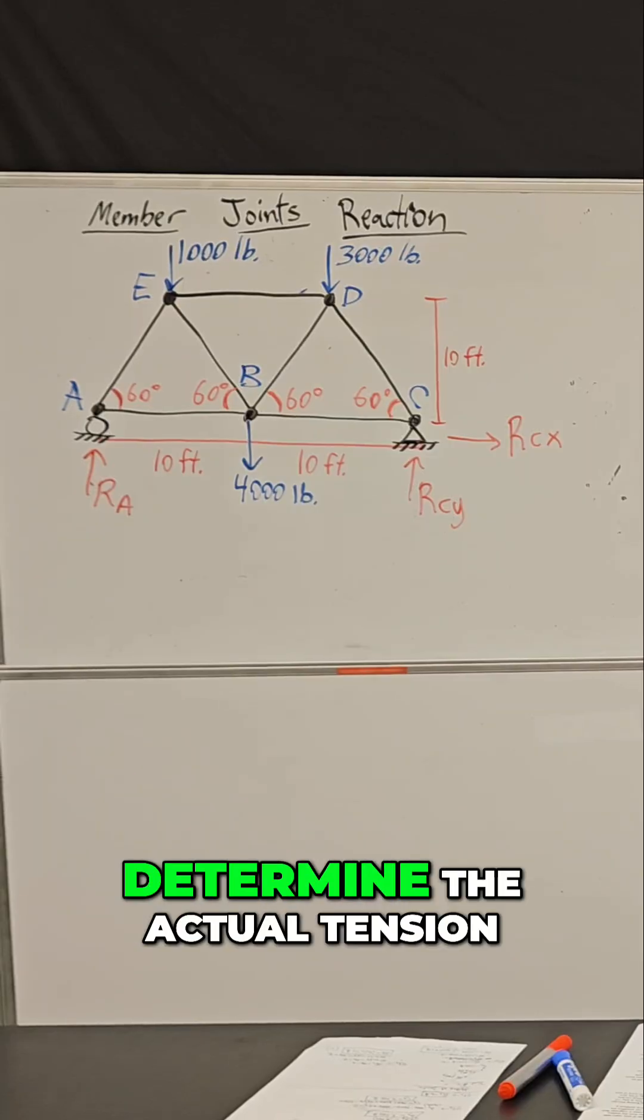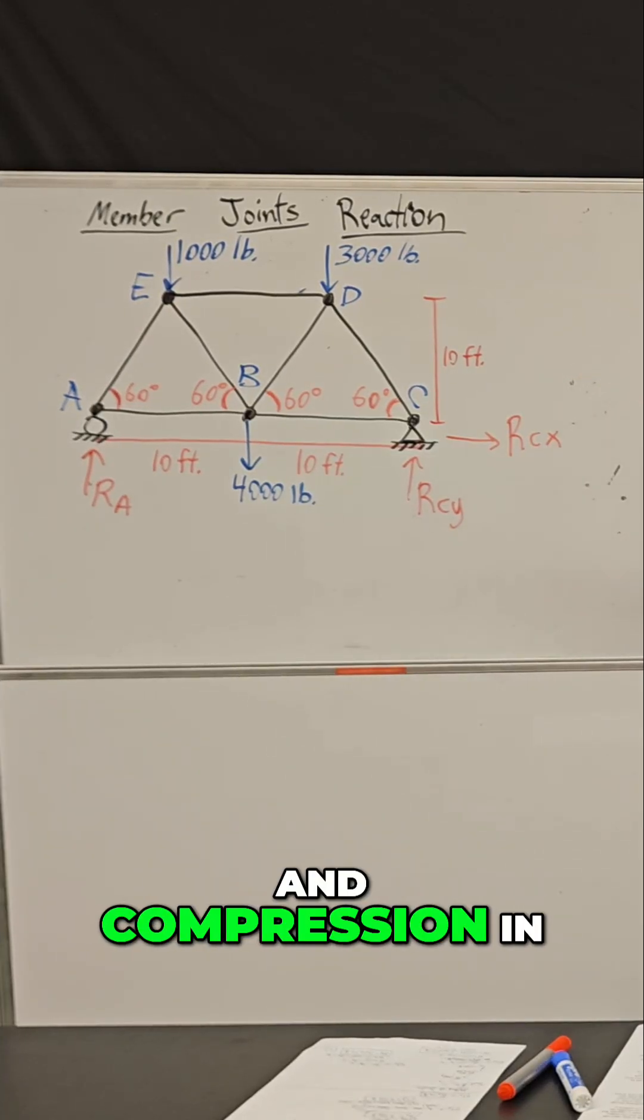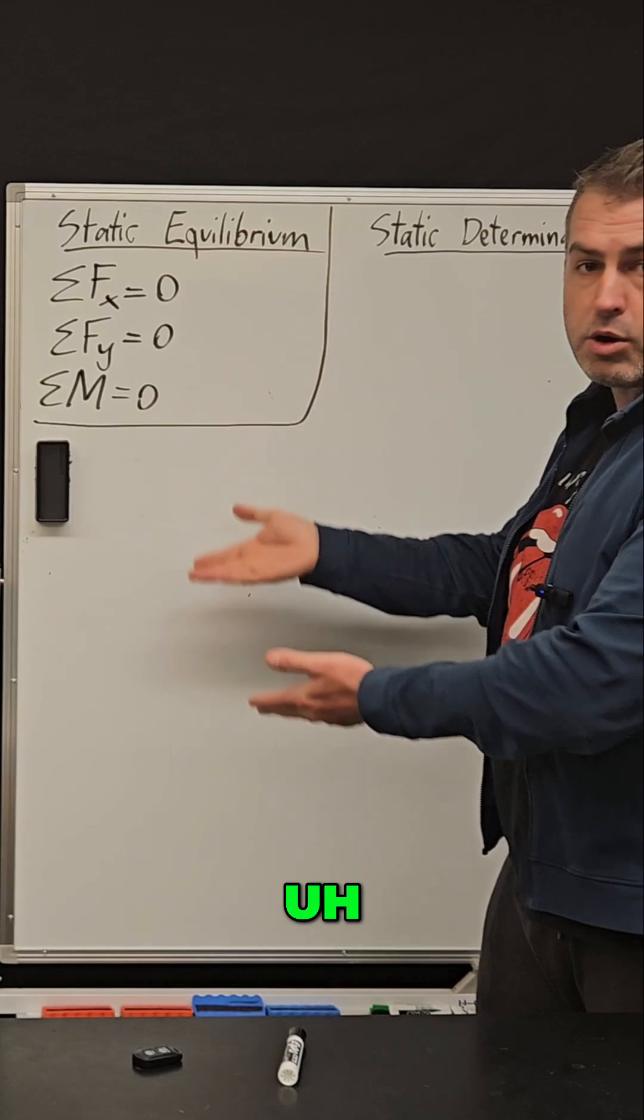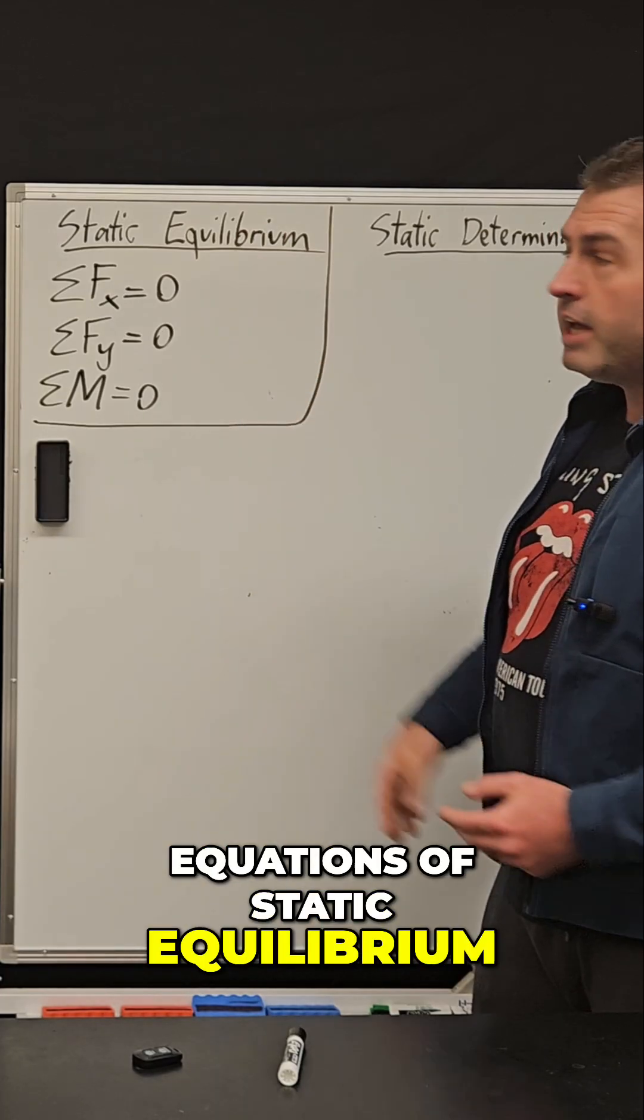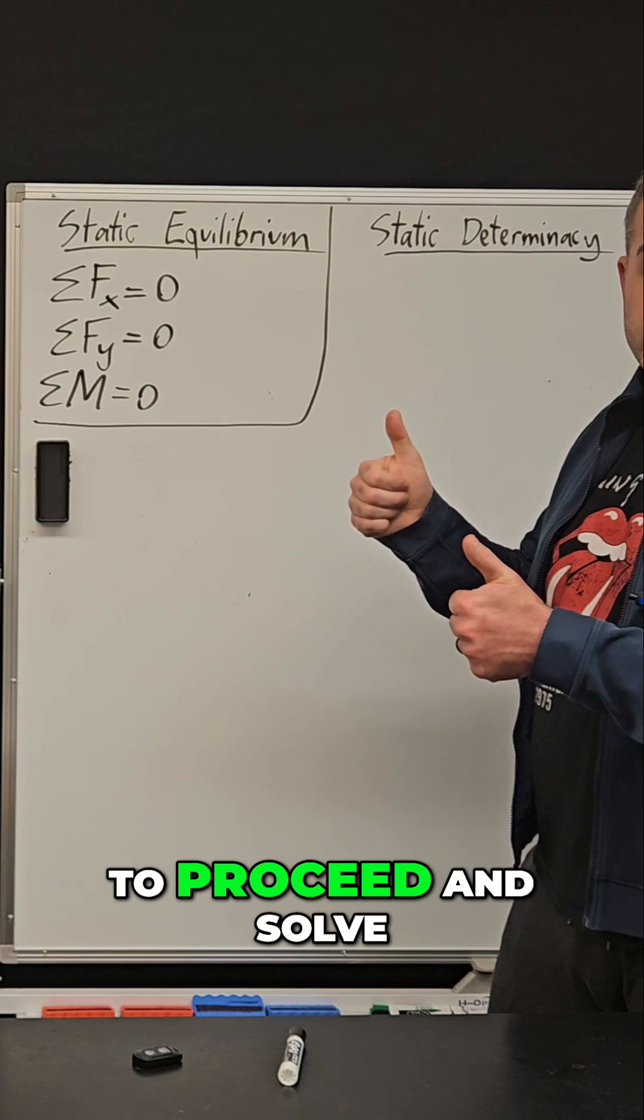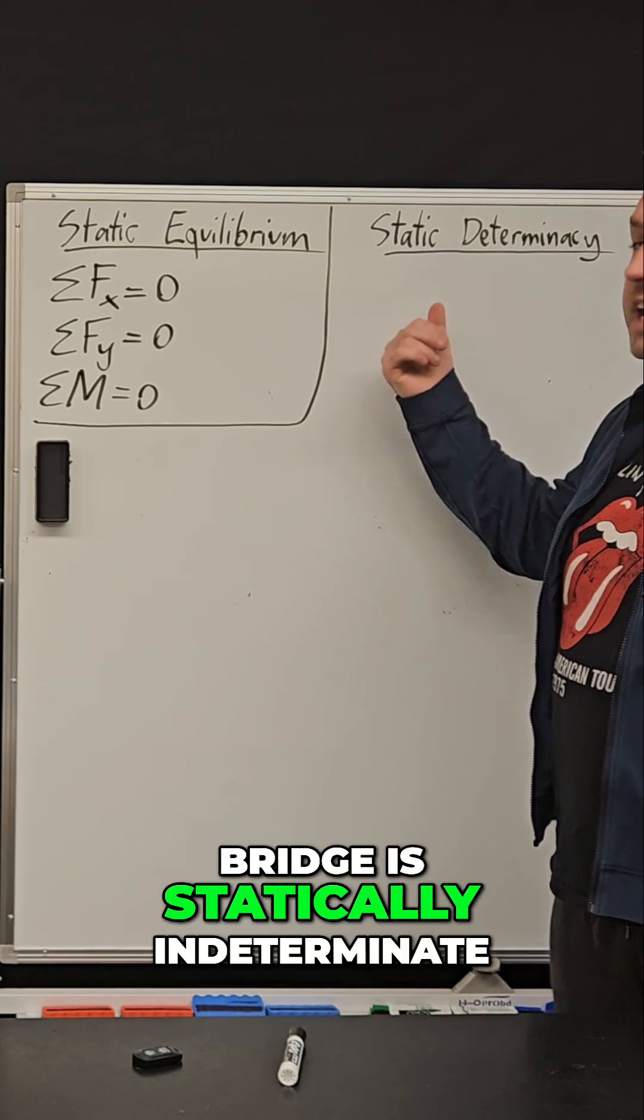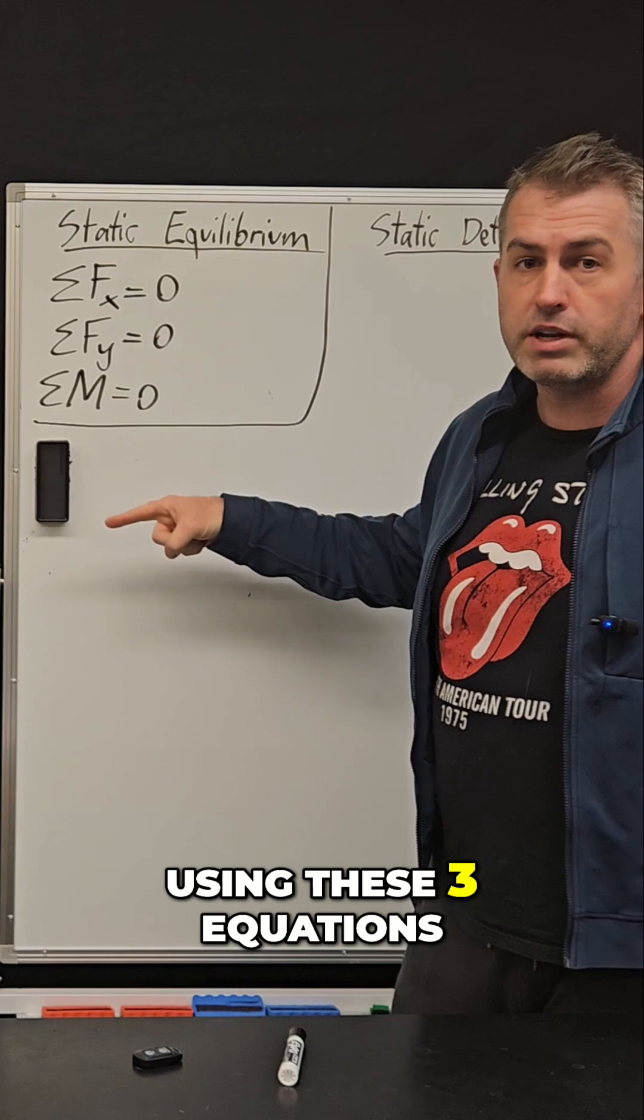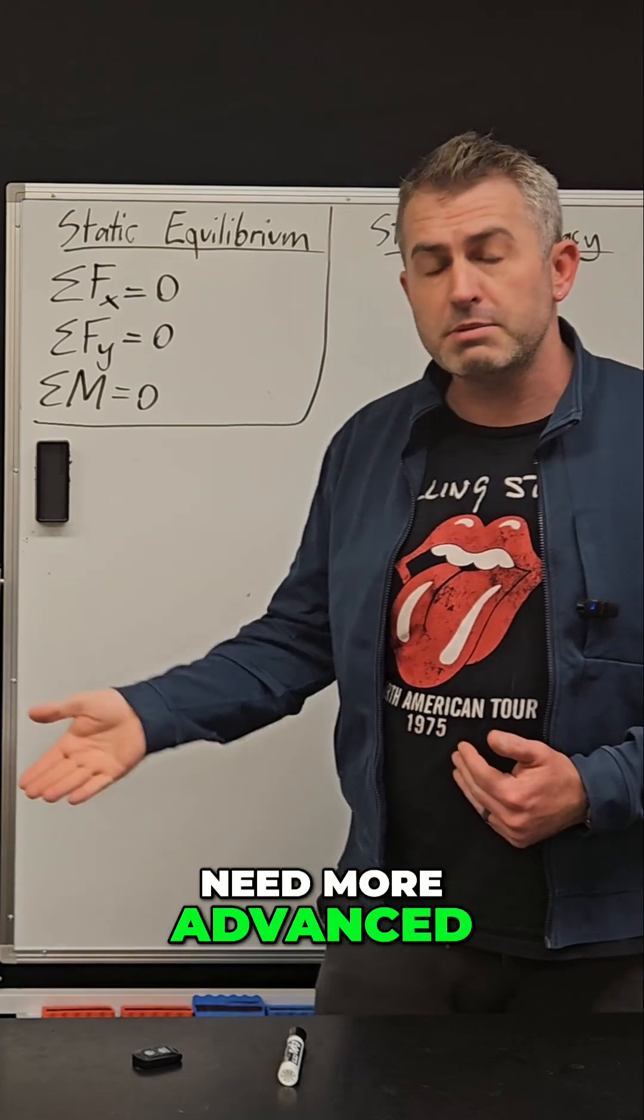Can we determine the actual tension and compression in these truss bridge members using our three equations of static equilibrium? If we can, then we're ready to proceed and solve. But if our bridge is statically indeterminate, that means we can't solve it using these three equations and we're going to need more advanced methods.